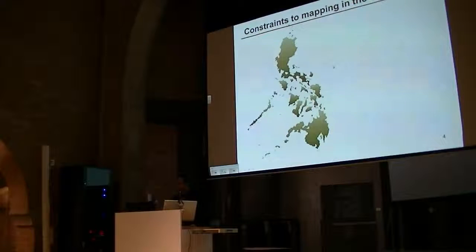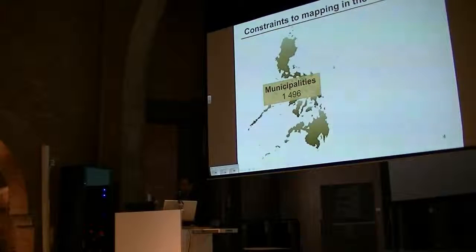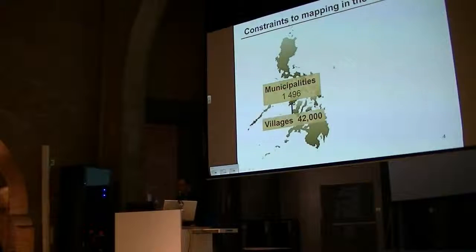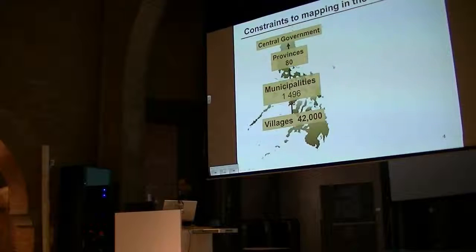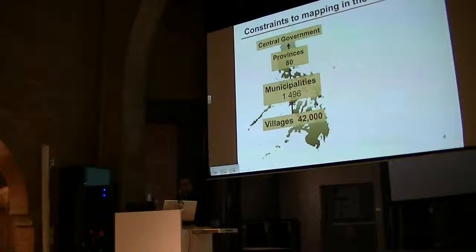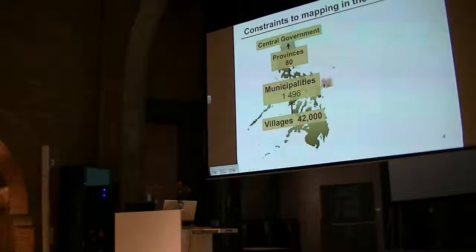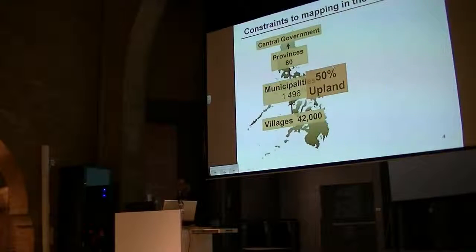There are a lot of constraints to mapping in the Philippines. First and foremost, you have 1,496 municipalities scattered in 7,000 islands, and they represent 42,000 villages of 110 million people. All the planning, all the mapping, have to be submitted to provinces, which submit it to the central government, which then disperses the funds for the land use plans to be implemented. Of the 1,496 municipalities doing their plans, 50% are in the uplands.